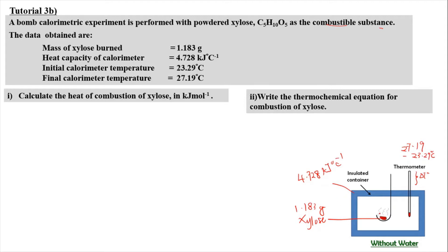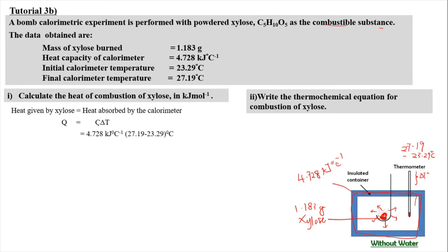The xylose is burned and heat is released to the surroundings, which is absorbed directly by the calorimeter. The heat given out by the xylose equals the heat absorbed by the calorimeter. Using q = CΔT, where C is the heat capacity of the calorimeter (4.728 kJ/°C) and ΔT = 27.19 − 23.29°C, the heat released by xylose and absorbed by the calorimeter is 18.44 kJ.